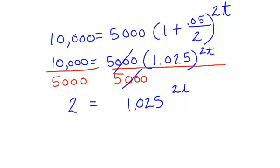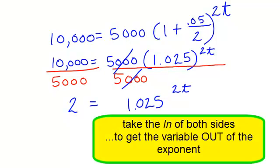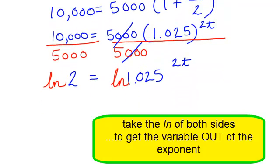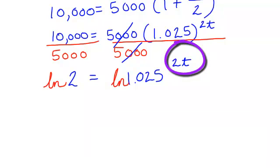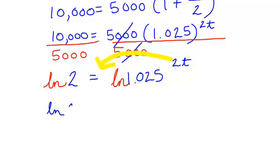And now, I'm going to take the log. Actually, I will do the natural log of both sides. And why did I do that? Because if I take the natural log of a number raised to an exponent, I do know this exponent comes down in front. So, I will now have the natural log of 2. And that will equal 2t times the natural log of 1.025.